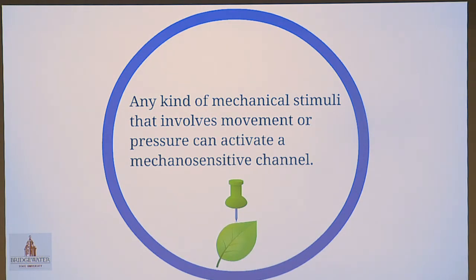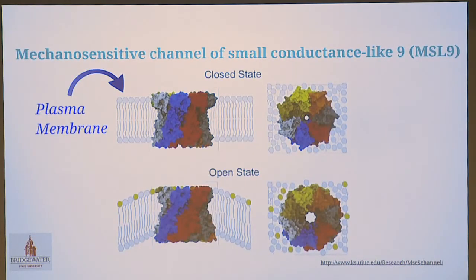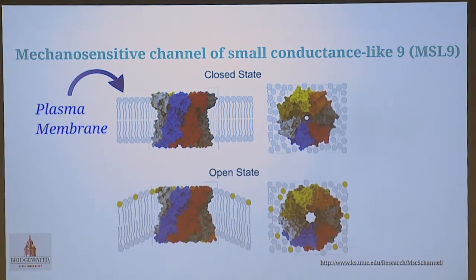It's been shown that when Arabidopsis is missing five mechanosensitive channels, the infection rate for nematodes is extremely low. A mechanosensitive channel is a type of ion channel that allows certain ions to pass through when given certain mechanical stimuli, such as gravity, water, wind, and any type of pressure that would cause the cell to move. I work on a specific mechanosensitive channel known as MSL9 — MSL9 stands for Mechanosensitive channel of Small conductance-Like 9. If you look here, you can see the channel surrounded by the plasma membrane. Ions are unable to travel through the plasma membrane, so they need channels. When there is no stimulus, the channel is closed and ions cannot travel through the pores; when given mechanical stimuli, it's open and ions are able to travel through.